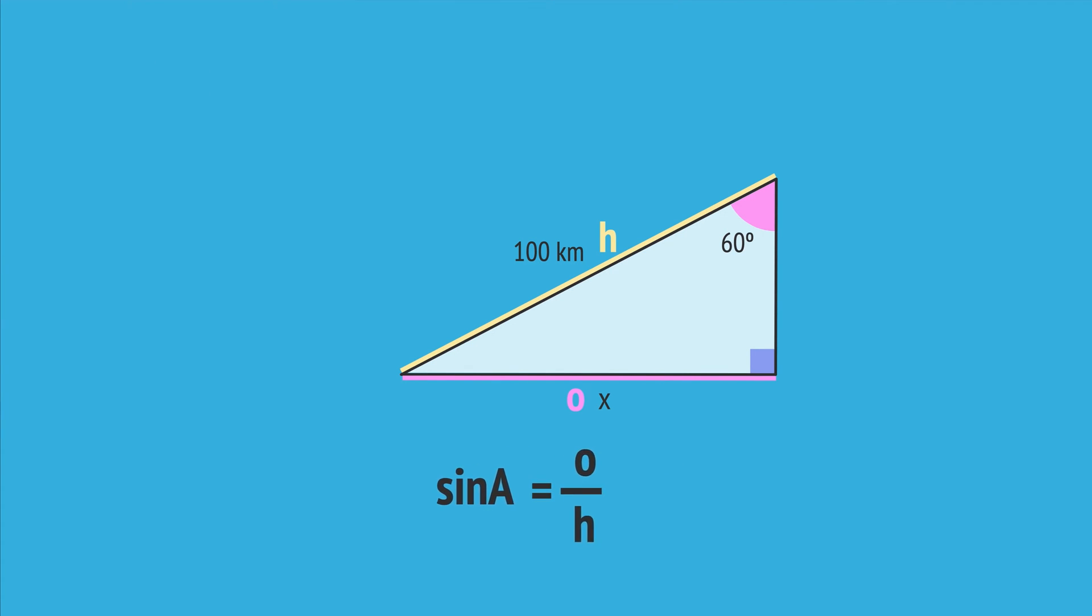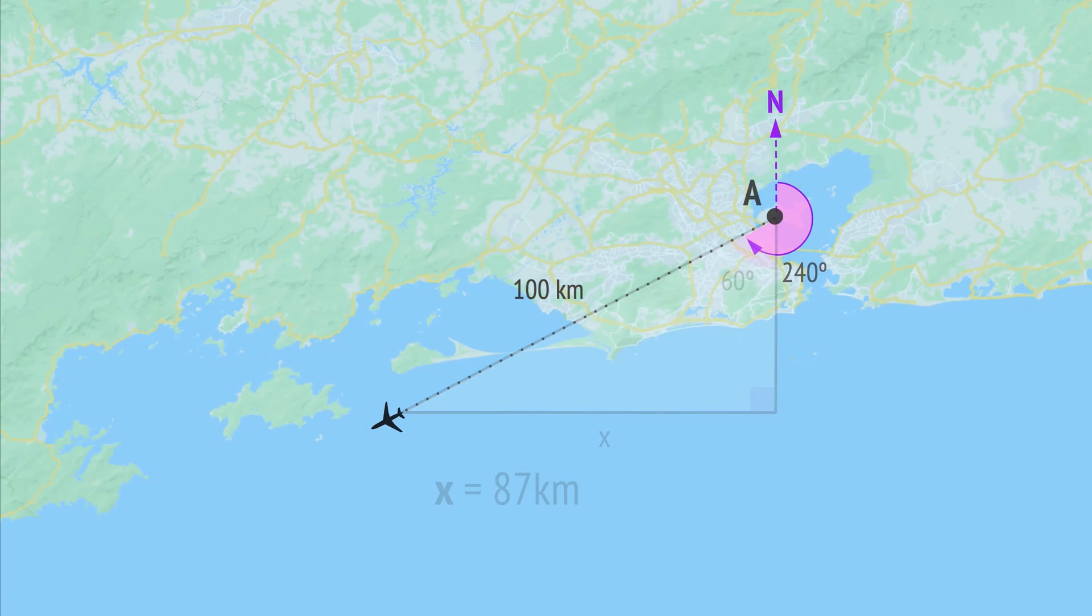Substituting the values, we write sin 60 degrees equals x over 100. Then multiply both sides by 100 to get x by itself. And finally, using a calculator gives x equals 87 kilometres. And so the plane is 87 kilometres west of the airport at this moment in time.